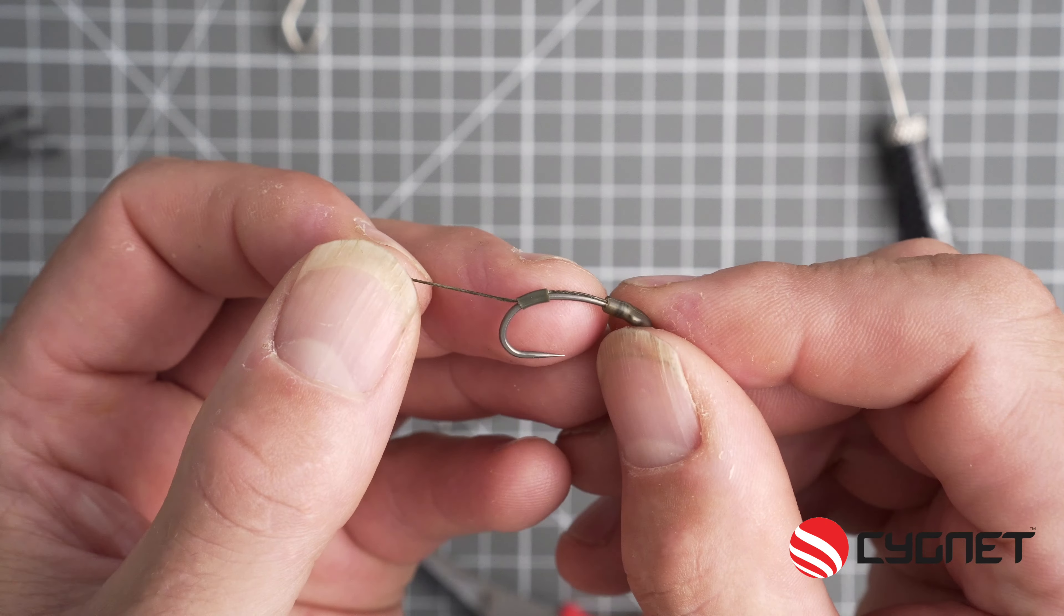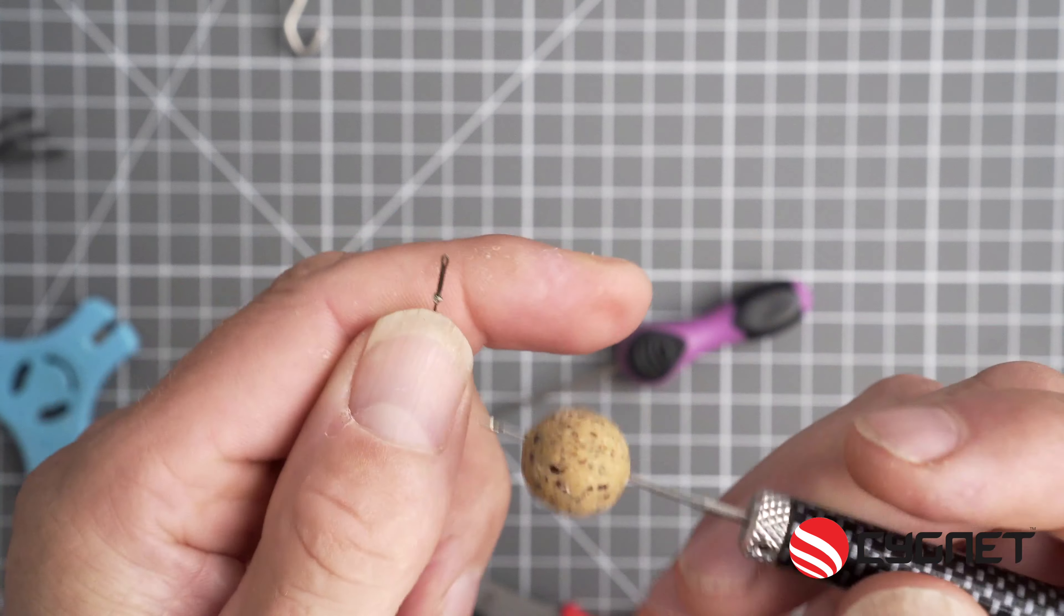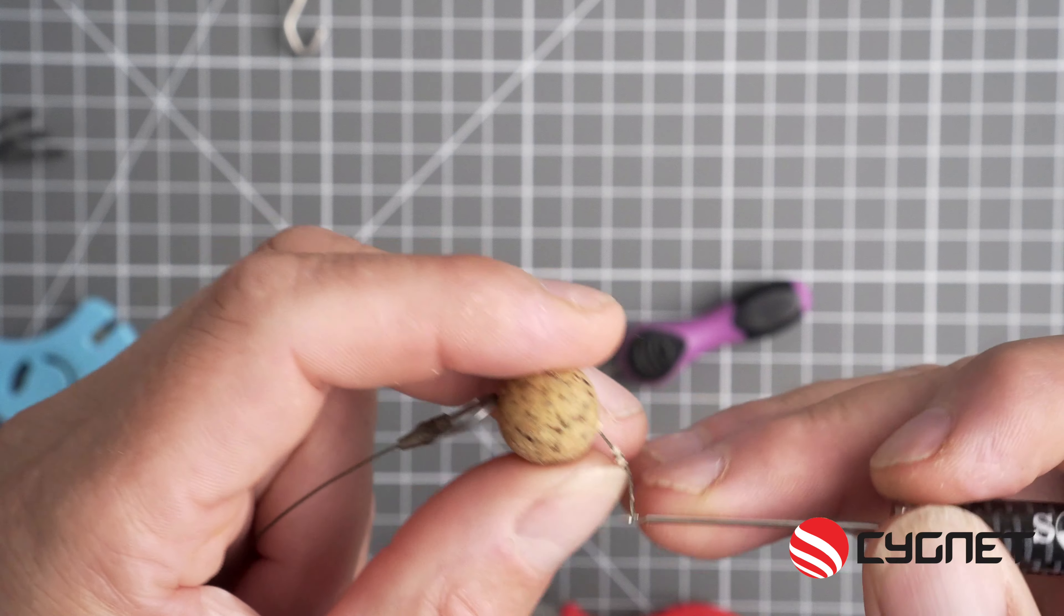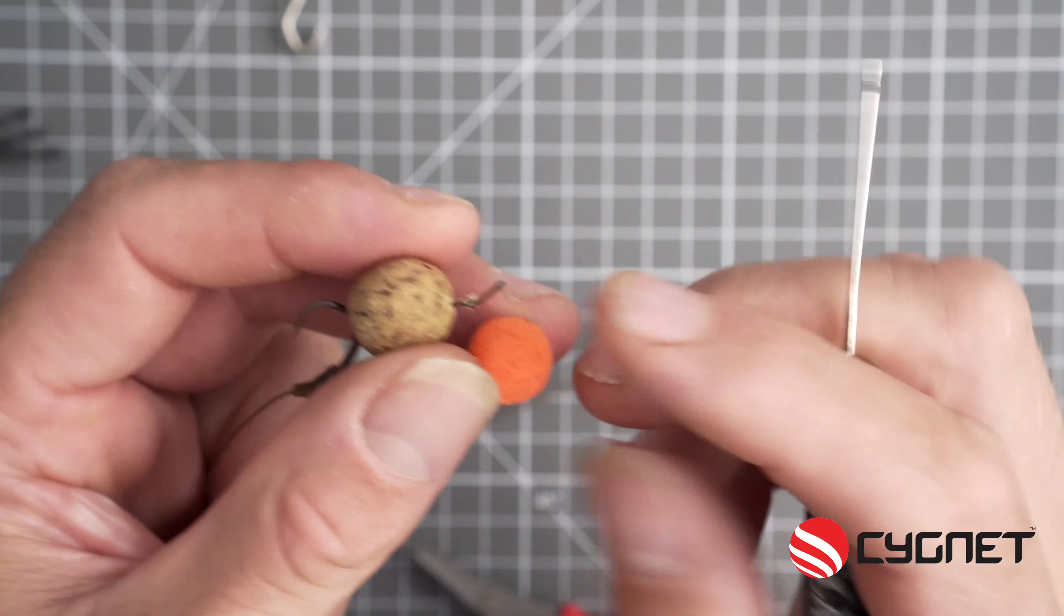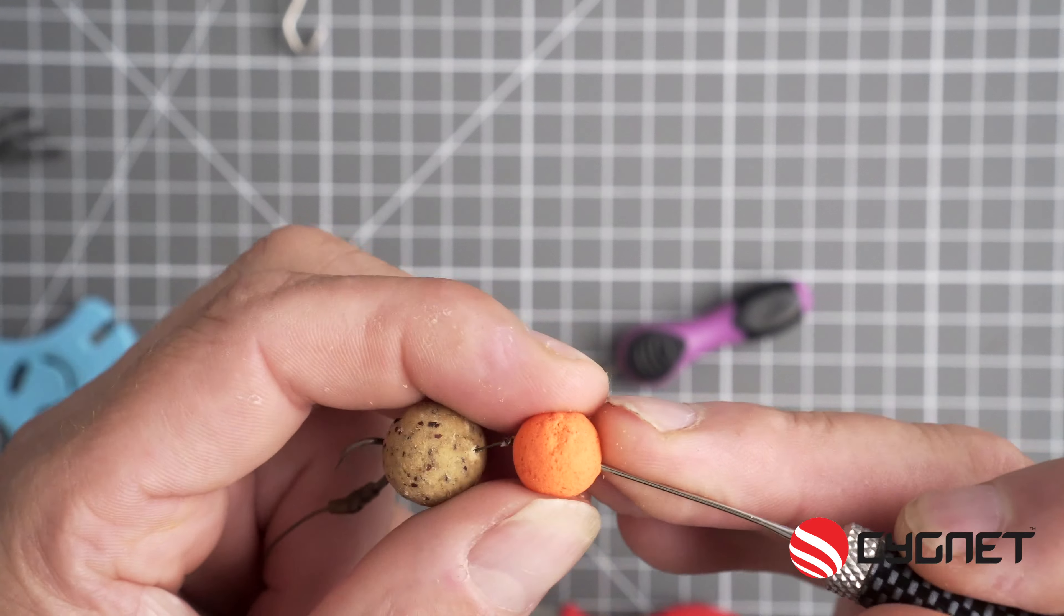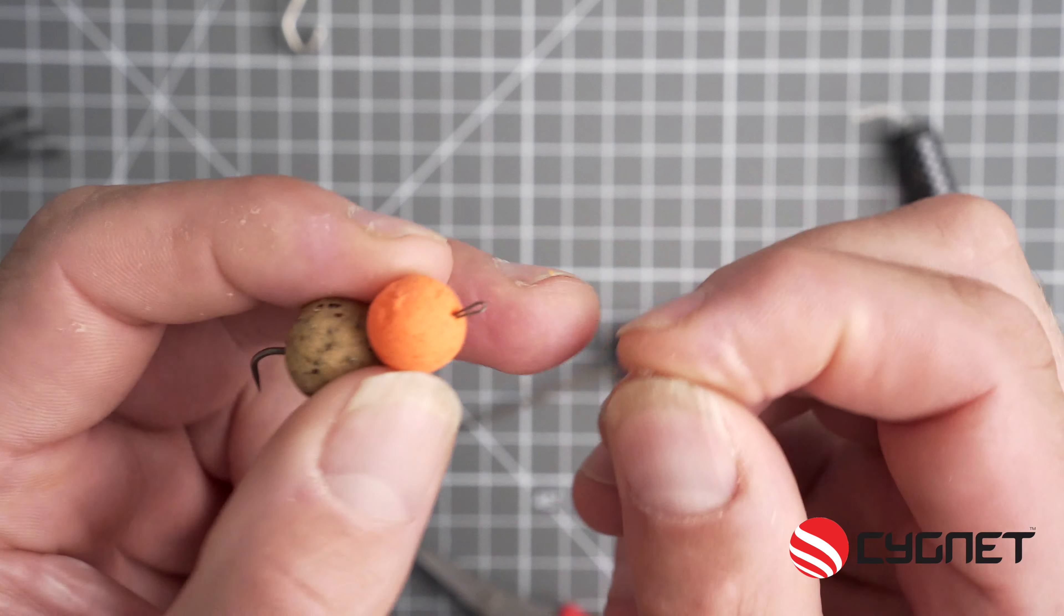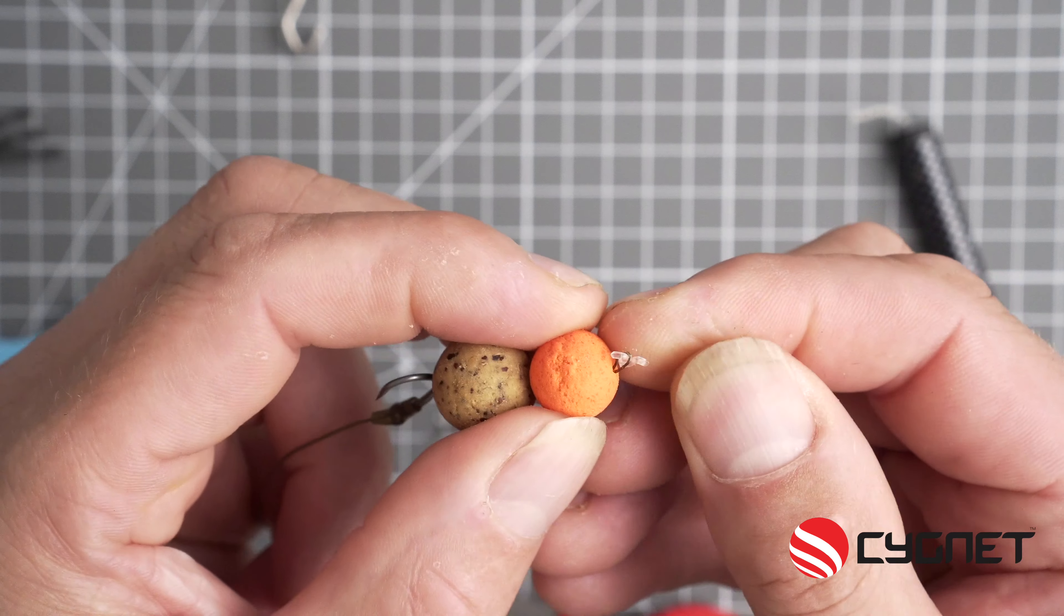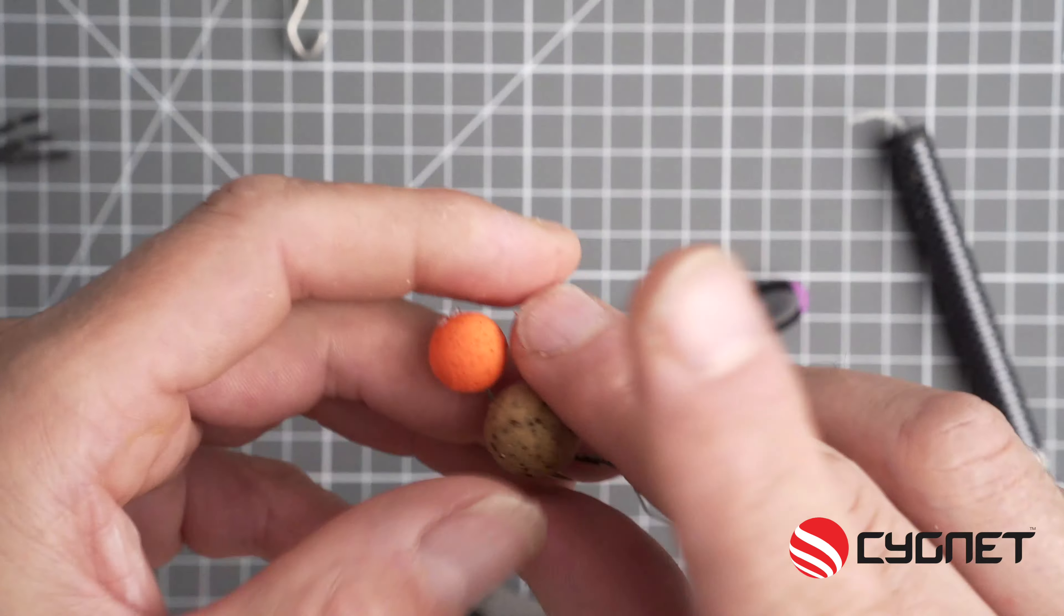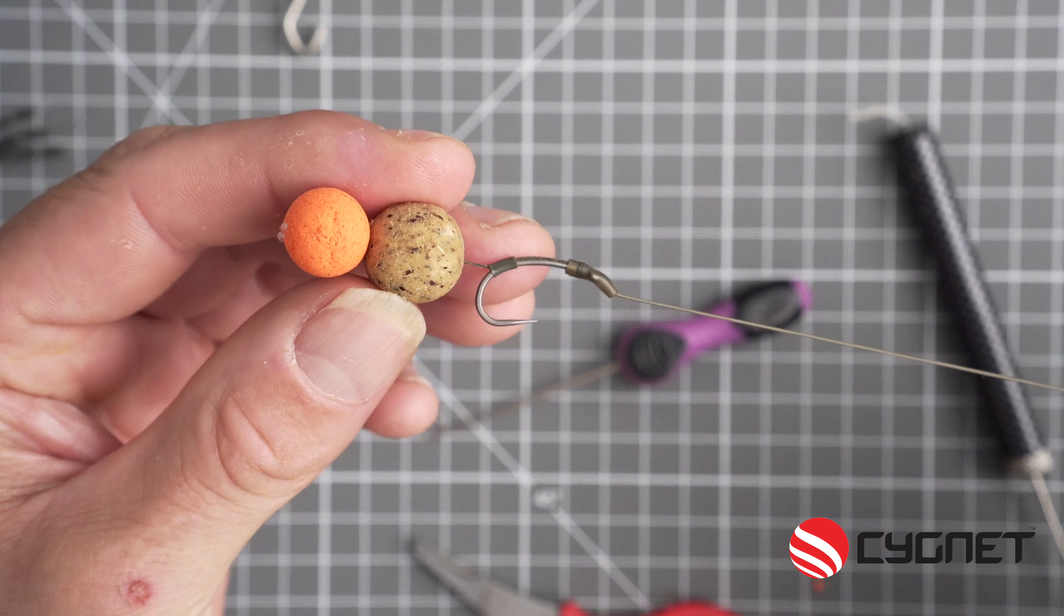Now once that's in position, you can then slide on your chosen hook baits. Today I'm using a 15mm bottom bait and a 12mm pop-up to create a snowman rig. I'm securing these in place with a small extender stop. Now once that's in position, there you go, a snowman rig.